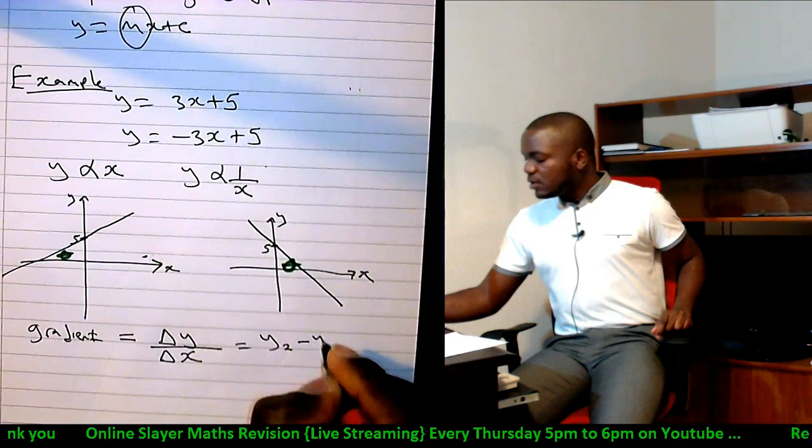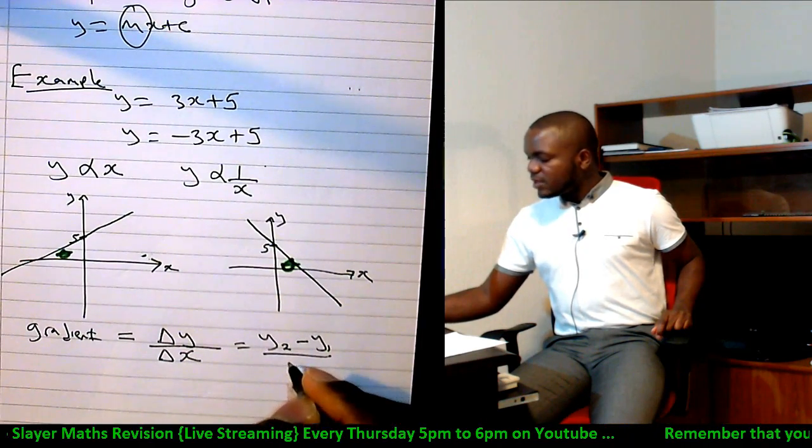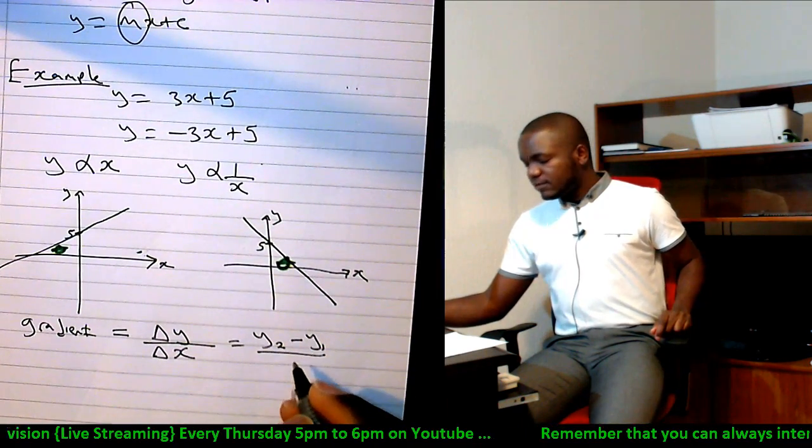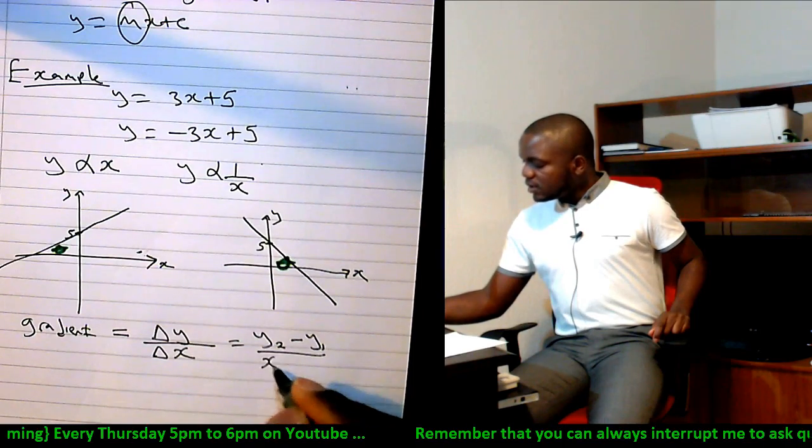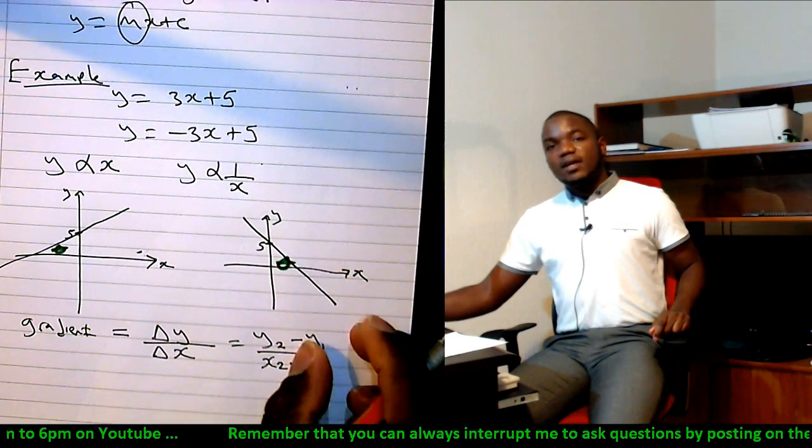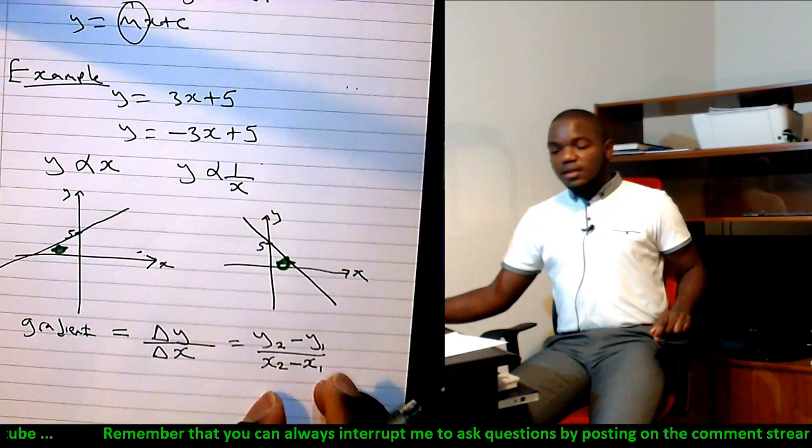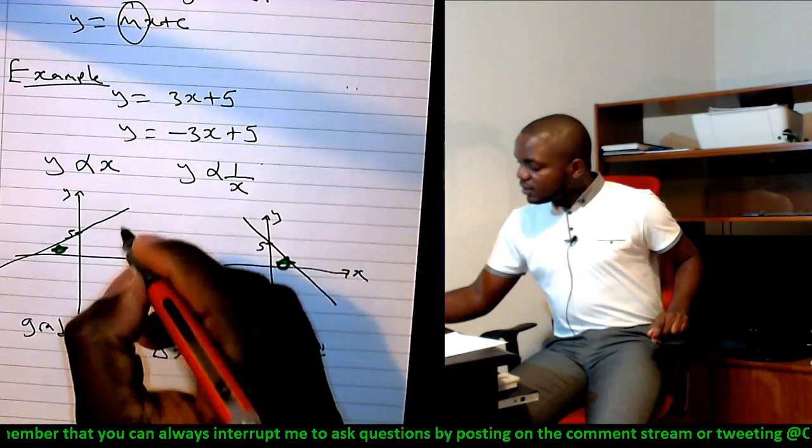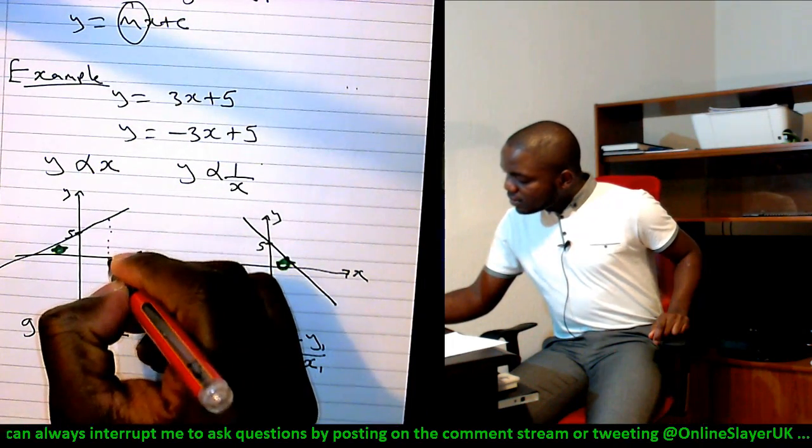I mean, if you know two points, x1 y1 and x2 y2, then you can easily get your gradient by looking at the difference between the y values and the x values. Now if you look at this critically, it looks like this.